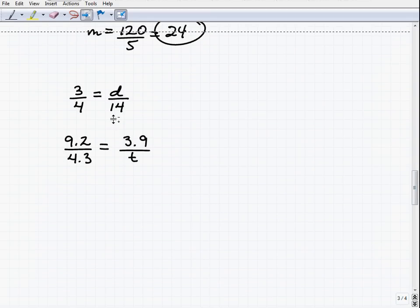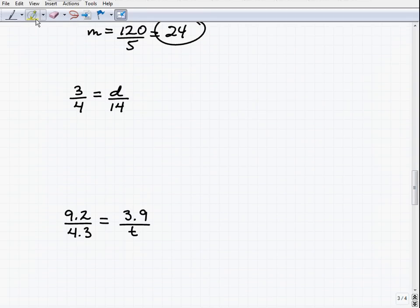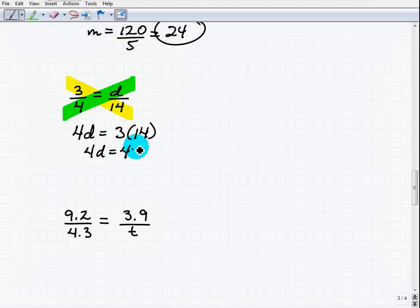Moving on. We have 3 times 14, and that's got to equal 4 times d. So 4d equals 3 times 14. Once again, get your calculator out.